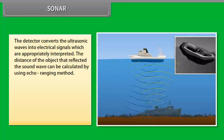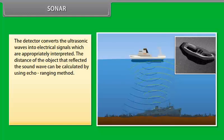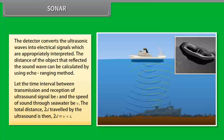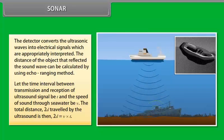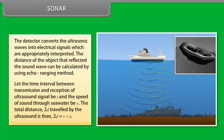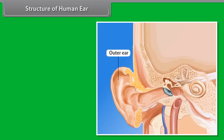Sonar. Sonar is the device that uses ultrasonic waves to measure the distance, direction, and speed of underwater objects. The word sonar stands for Sound Navigation And Ranging. Sonar consists of a transmitter and a detector and is installed in a boat or a ship. The transmitter produces and transmits ultrasonic waves. These waves travel through water and after striking the object on the seabed get reflected back and are sensed by the detector.